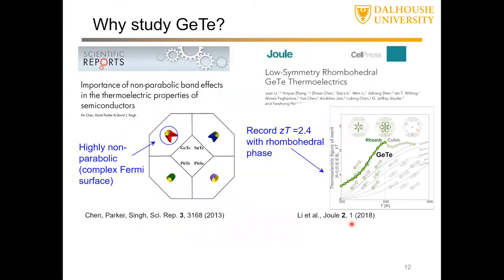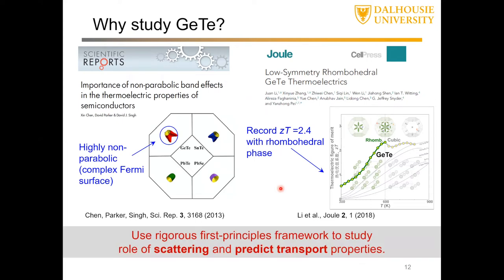When the unit cell tilts, an atom moves along the [111] direction closer to three of its neighbors and breaks three bonds with the others, resulting in an atomic layered structure with strong intralayer bonding in-plane and weak interlayer bonding cross-plane — a quasi-two-dimensional material. These materials have anisotropic transport properties: in-plane transport is very different from cross-plane. This study was motivated by an earlier 2013 DFT study by D.J. Singh showing GeTe's highly non-parabolic band structure is good for power factor, and a 2018 experimental study showing a record ZT of 2.4 in the rhombohedral phase.